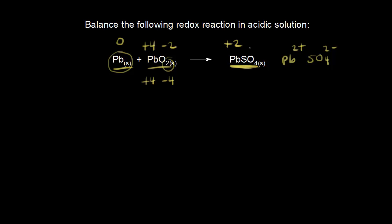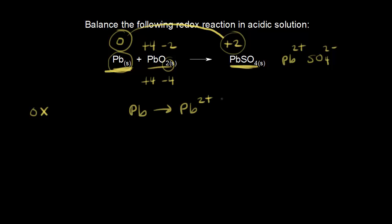Next, we write our oxidation half-reaction. What is being oxidized? Solid lead goes from an oxidation state of zero to plus two — that's an increase, so that's oxidation. So solid lead goes to Pb²⁺. Since sulfate is present, we need it on both sides: solid lead plus SO₄²⁻ goes to lead sulfate, PbSO₄. Checking atoms: one lead on the left, one on the right; one sulfur on each side; four oxygens on each side. All atoms are balanced.